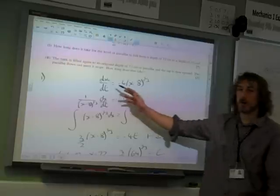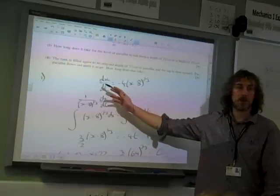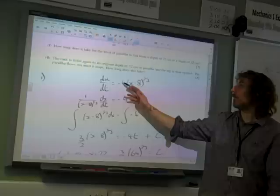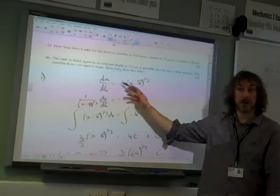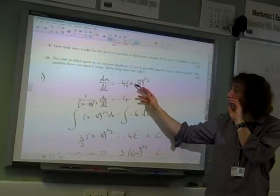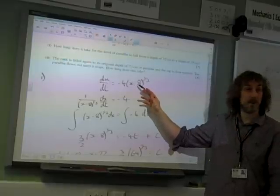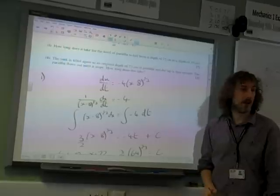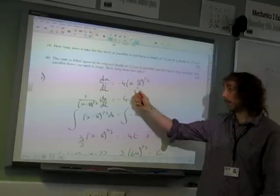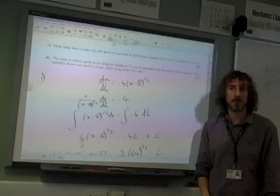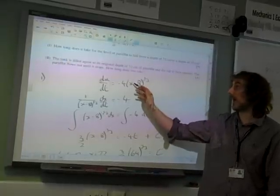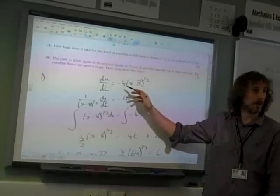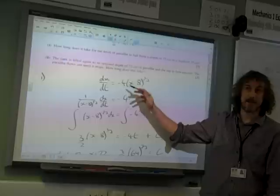And if we look at the differential equation, the rate at which it's flowing out, the rate of change of depth is going down all the time, isn't it? And as we get to 8, it becomes 0. So once we get to x being 8, at that point, the flow from the tank has stopped. As x gets closer to 8 from being much bigger than that, the flow is reducing all the time, but at 8 it stops.